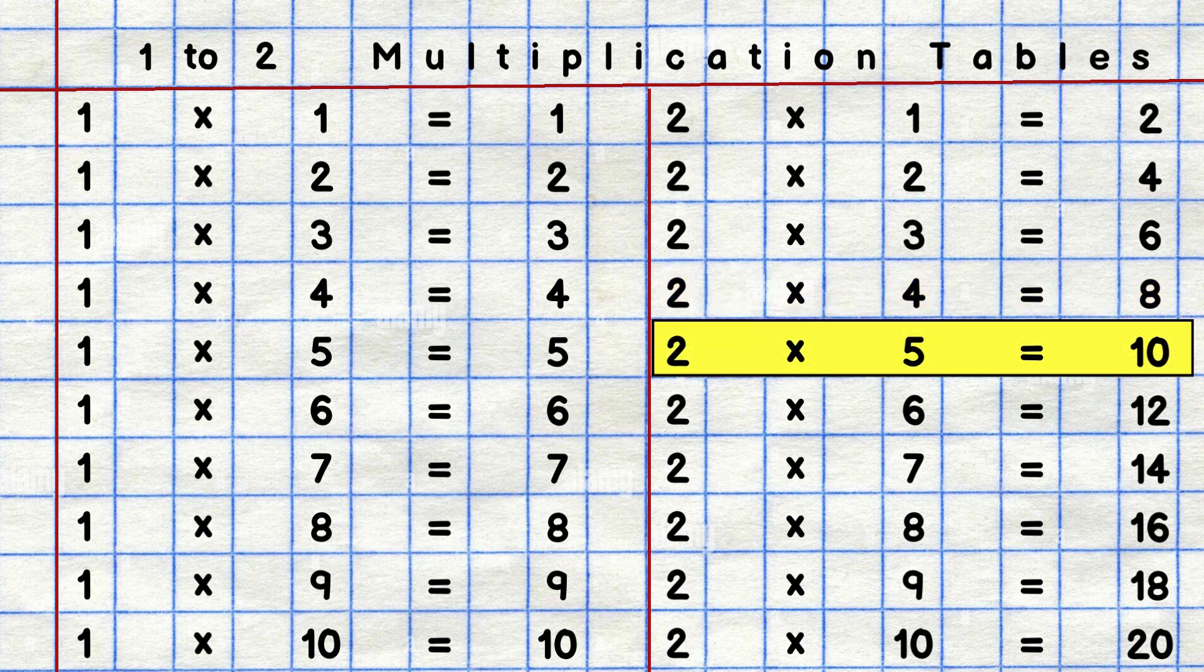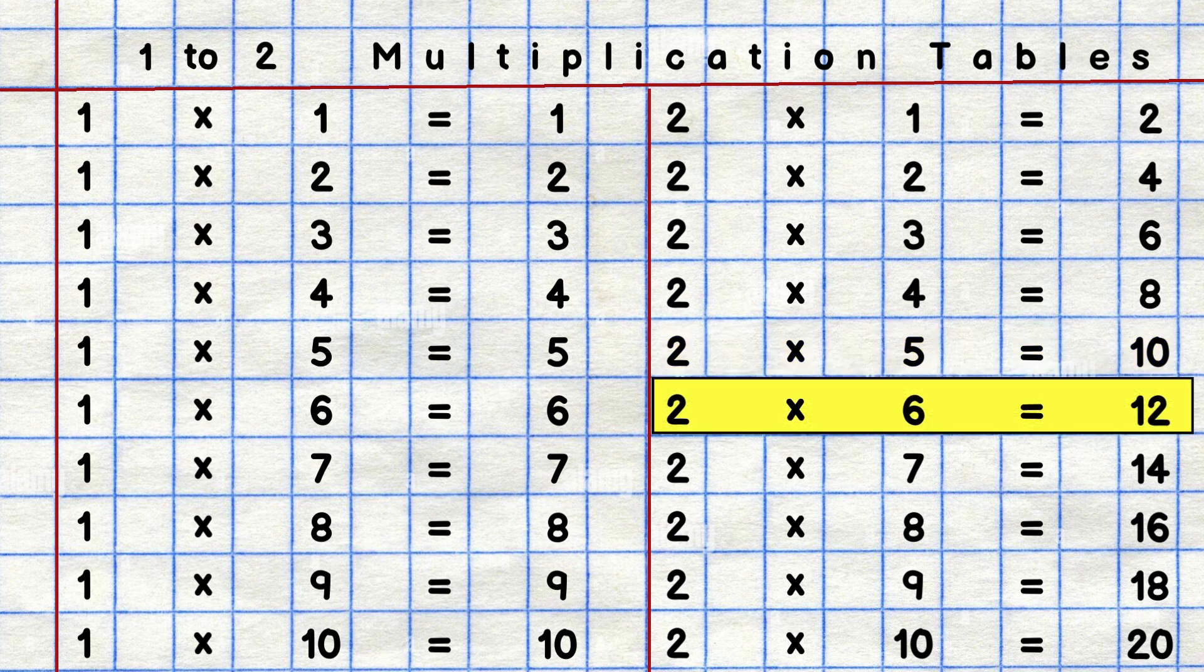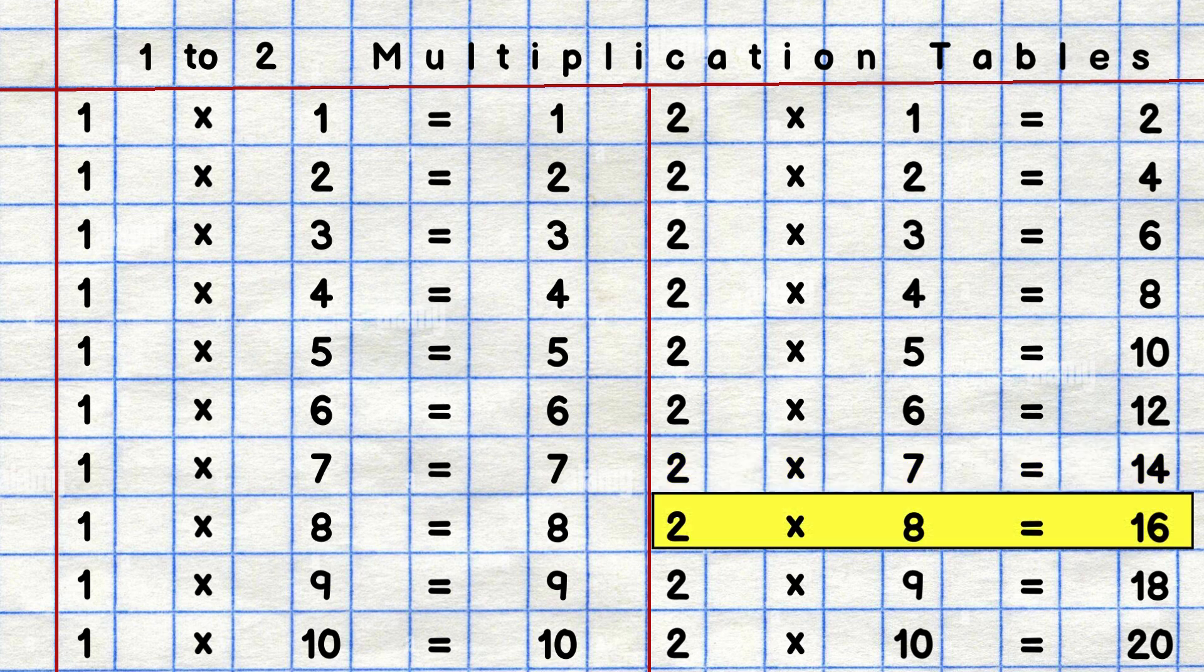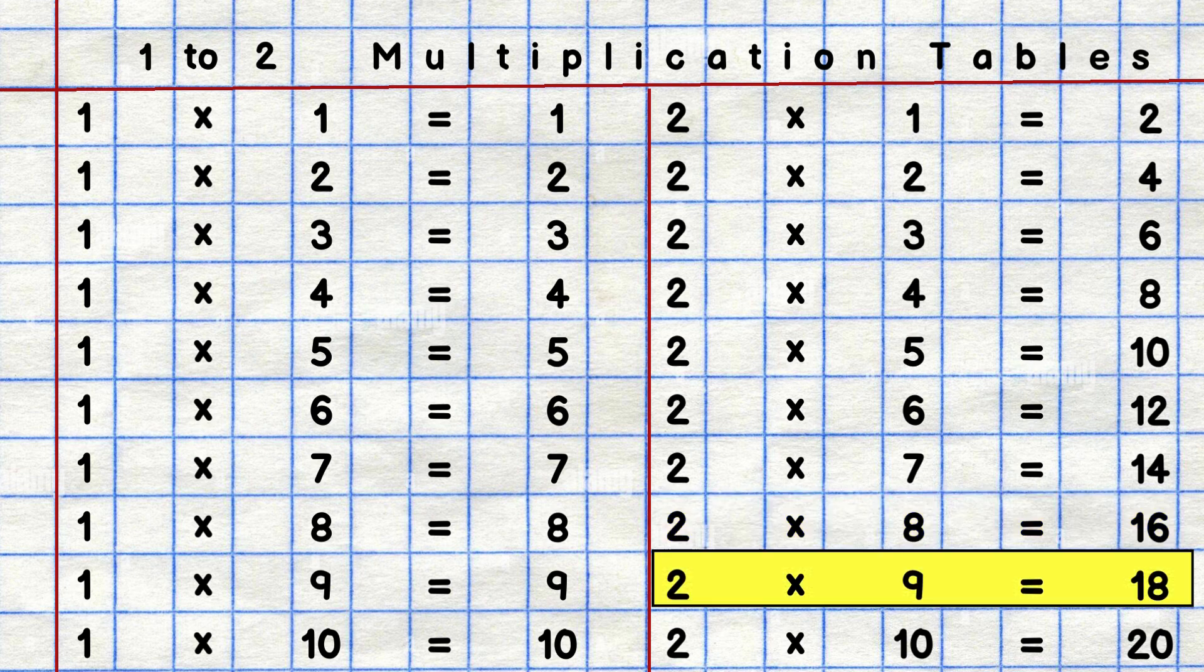two six are twelve, two sevens are fourteen, two eights are sixteen, two nines are eighteen, two tens are twenty.